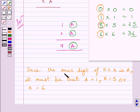Since the one's digit of A multiplied by A is A, it must be that A equals 1, A equals 5, or A equals 6.